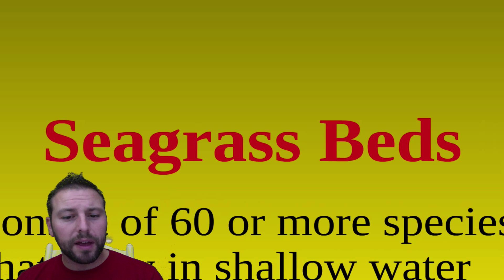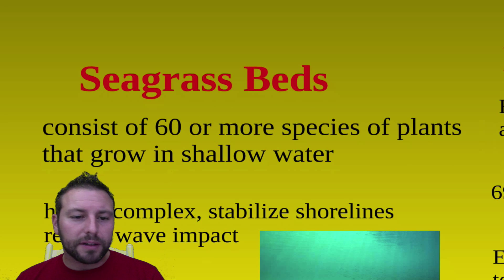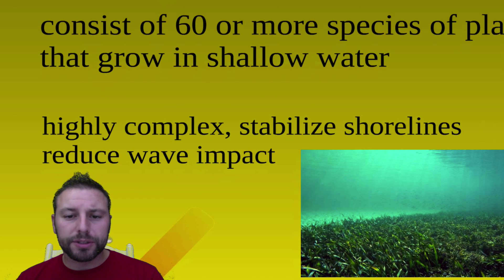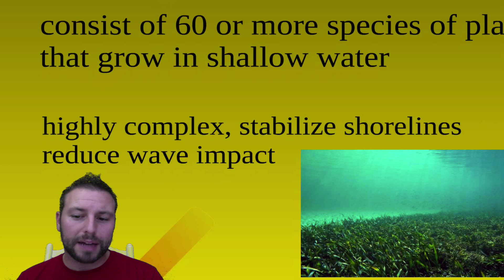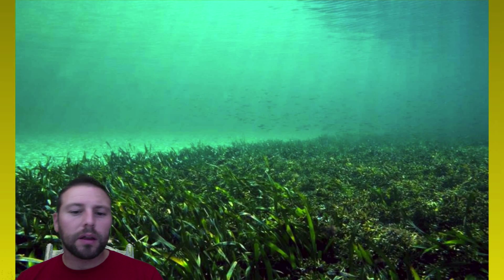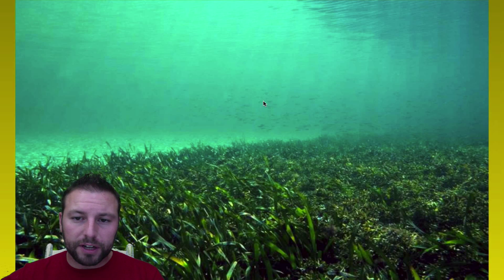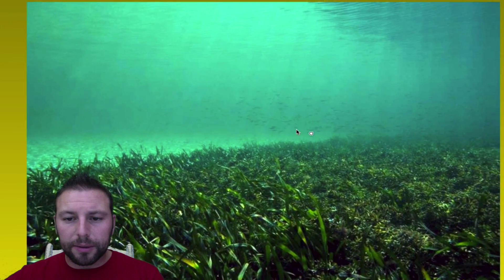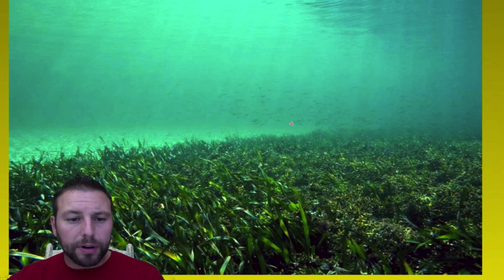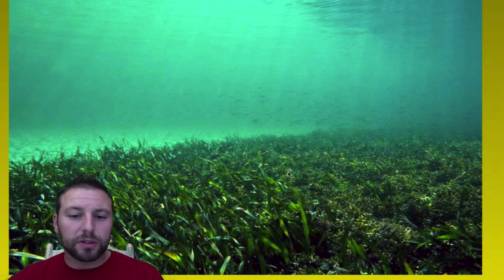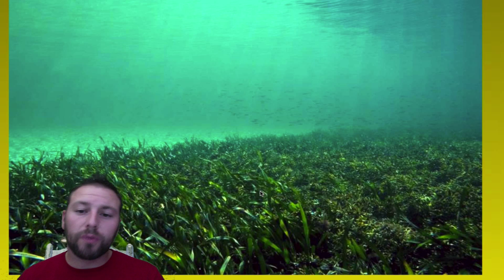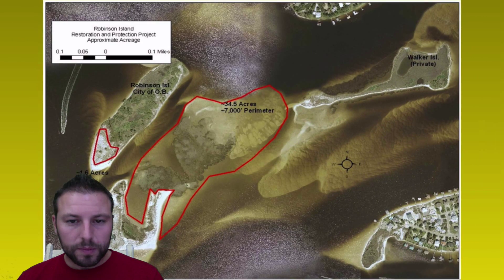Our seagrass beds consist of a number of different plants that are able to grow in shallow water, rooted within salt water. They're highly complex regions that stabilize shorelines and reduce wave impact. Interestingly, out towards Sag Harbor and other east end places on Long Island, they're actually replacing seagrass beds — they make these big wreaths, set them out, sink them, and they grow to replenish whatever seagrass has been lost. This is just a revitalization project.